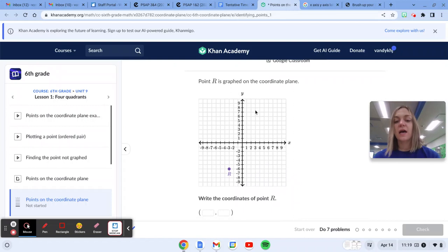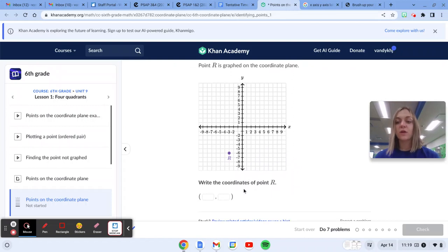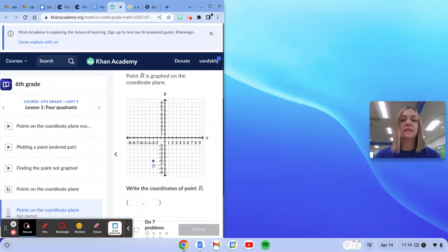This question says to find the coordinates or the ordered pair for R. So I have to find the x value first, which is negative 3, and then the y value, which is negative 6.